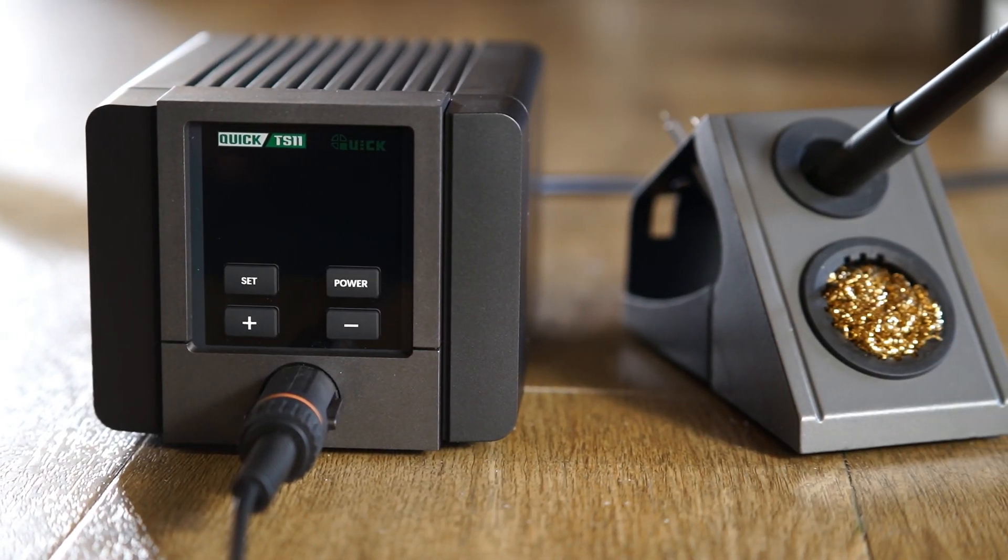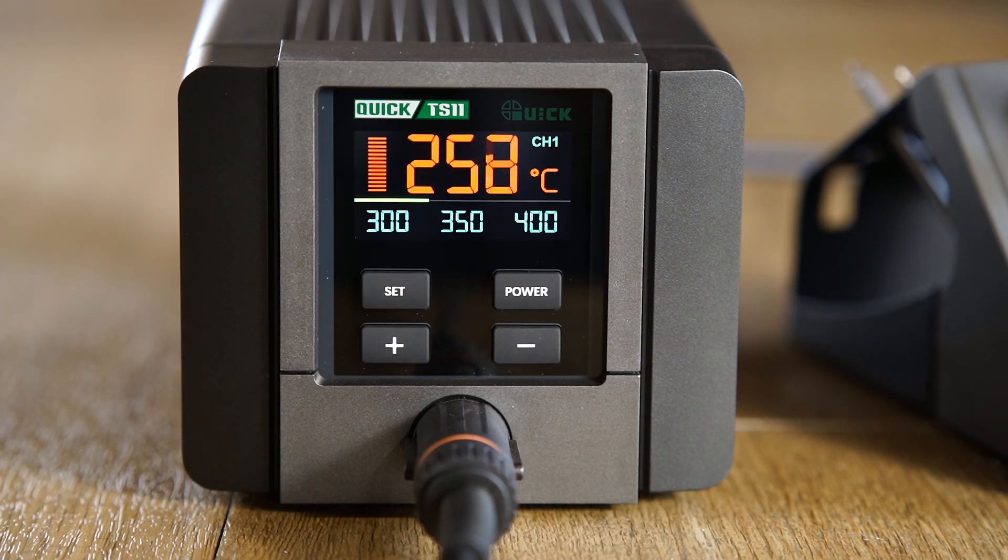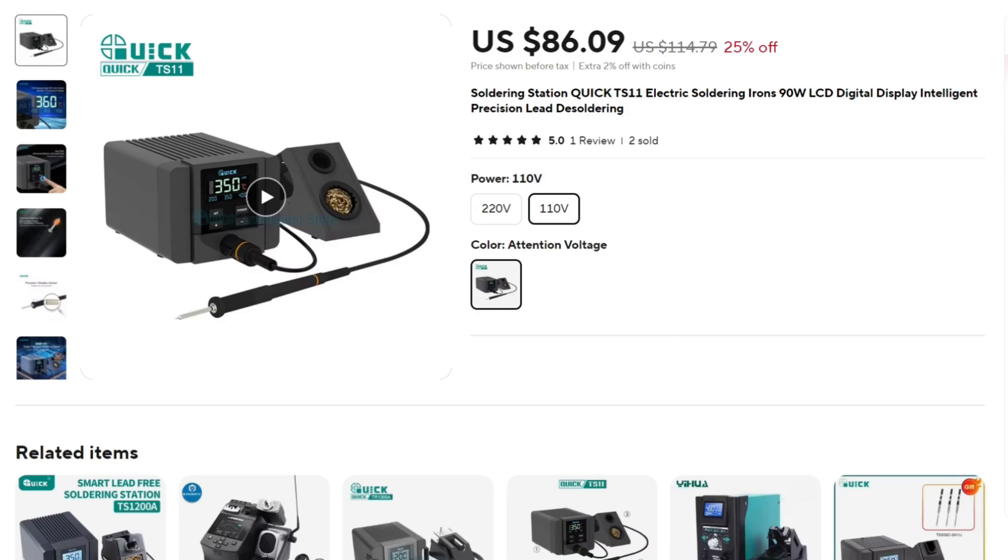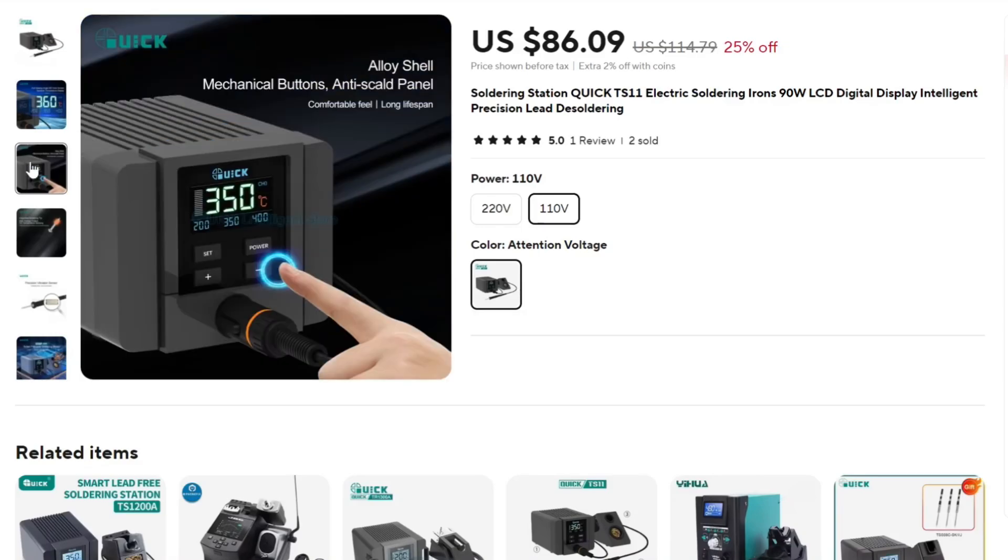In this video I'll be reviewing the Kwik TS-11 soldering iron. At the time of filming this video you can purchase the TS-11 for around 85 US dollars. Sounds like a good deal right? But what exactly do you get for your money?